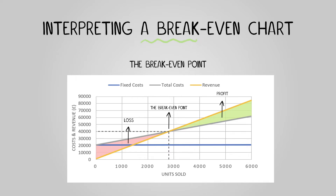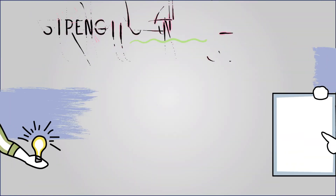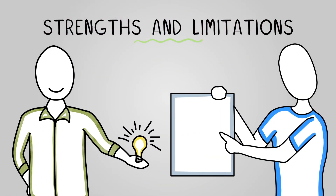You can also see that we have shaded in two areas: the area of loss and the area of profit. This shows the range of units sold or revenue earned where we will be making a loss or profit. It's also possible to mark the margin of safety on the chart, usually represented with lines drawn at the break-even point and at the actual units sold and money earned, making it easy to see how large the margin of safety is.